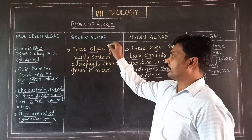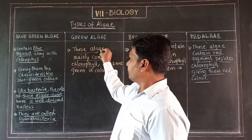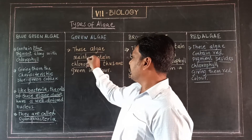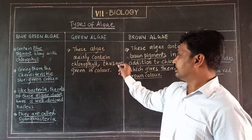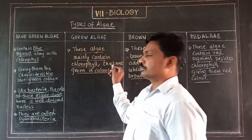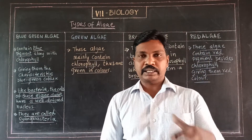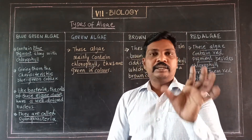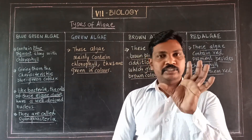Green algae. These are the green algae. Green algae mainly contain chlorophyll. The green pigment is the primary pigment, so the algae are green in color.